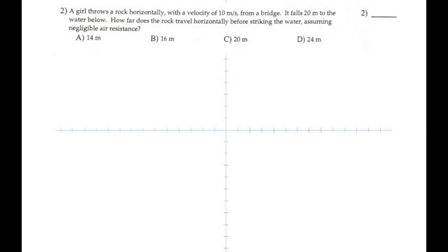Here's number two. A girl throws a rock horizontally — that's the most important word in the problem. If anything is thrown horizontally, its initial vertical velocity is zero. That's very important. Write that down. If you see the word 'horizontally,' the initial vertical velocity is zero. The horizontal velocity is 10 m/s. What is the vertical velocity? Zero. What is the vertical acceleration? Negative 9.8 m/s².